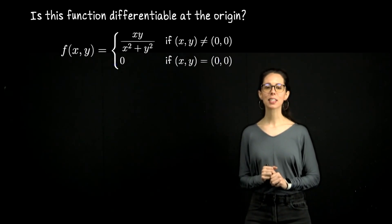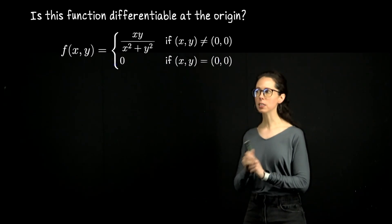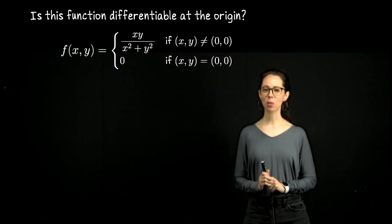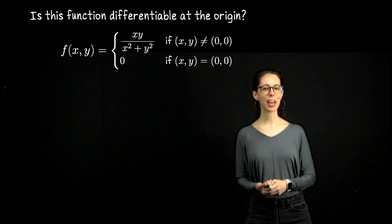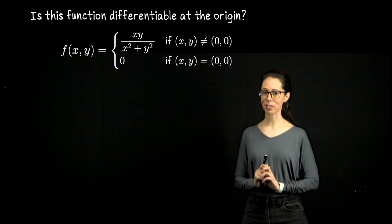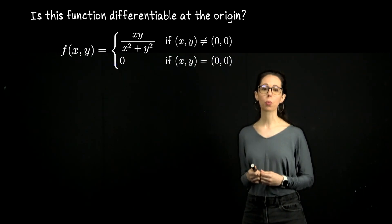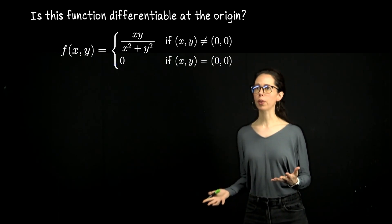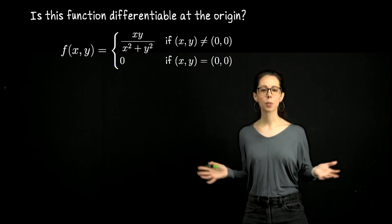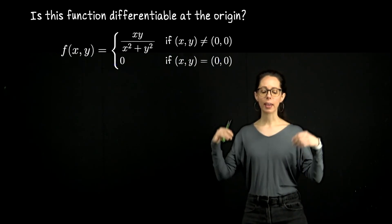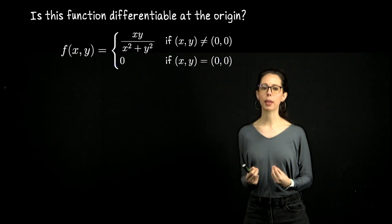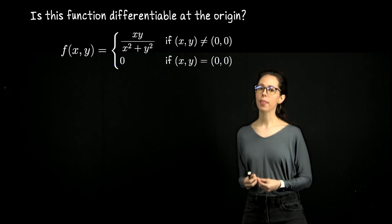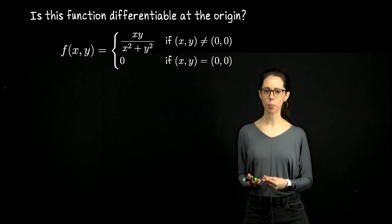The goal of this video is to test the definition of differentiability on this function at the origin. We will reach a conclusion, and then find our conclusion again a second way using a theorem, which is actually going to be much faster. Both approaches are worth watching. The first thing we're going to do is compute the partial derivatives of this function with respect to x and y at the origin to propose a Jacobian matrix. Then we will test if our function is being suitably approximated by its first-order approximation near the origin — that's checking the function using the definition of differentiability.